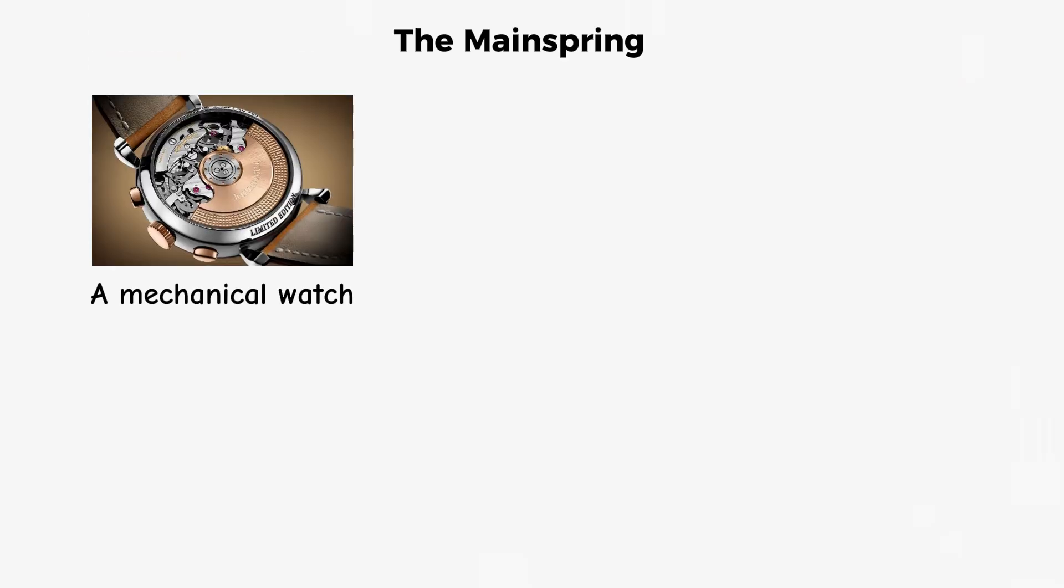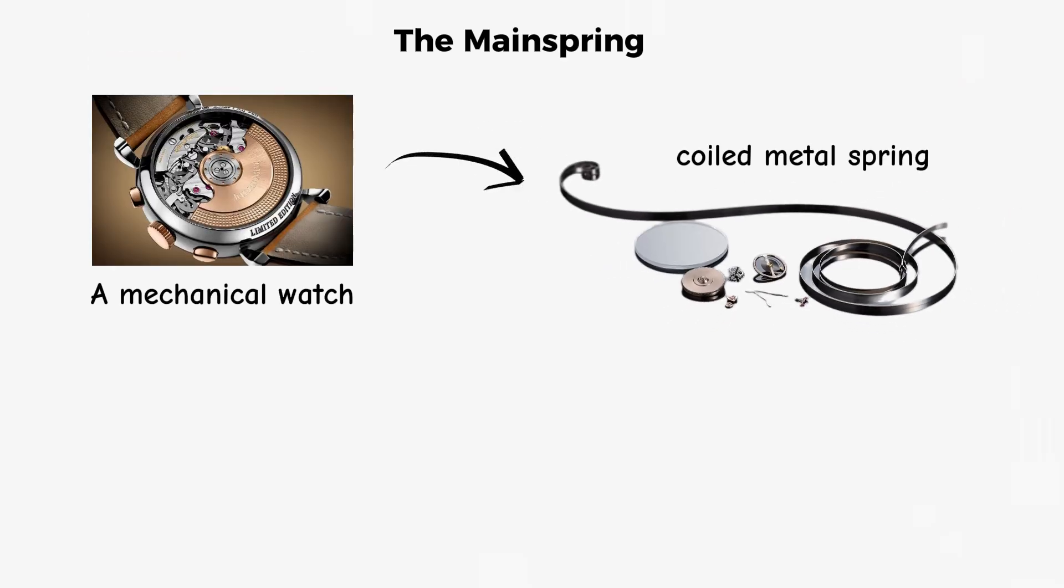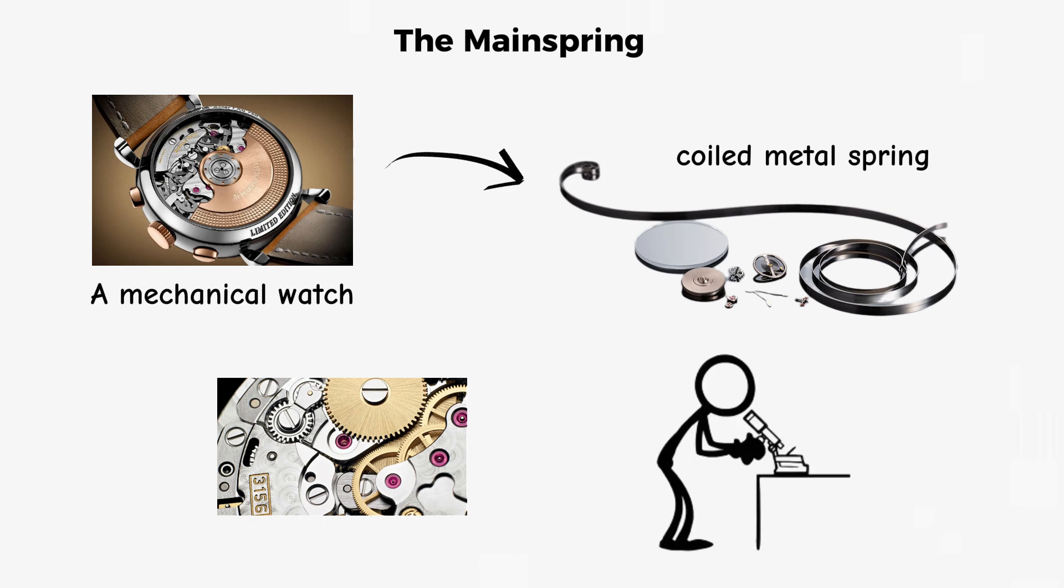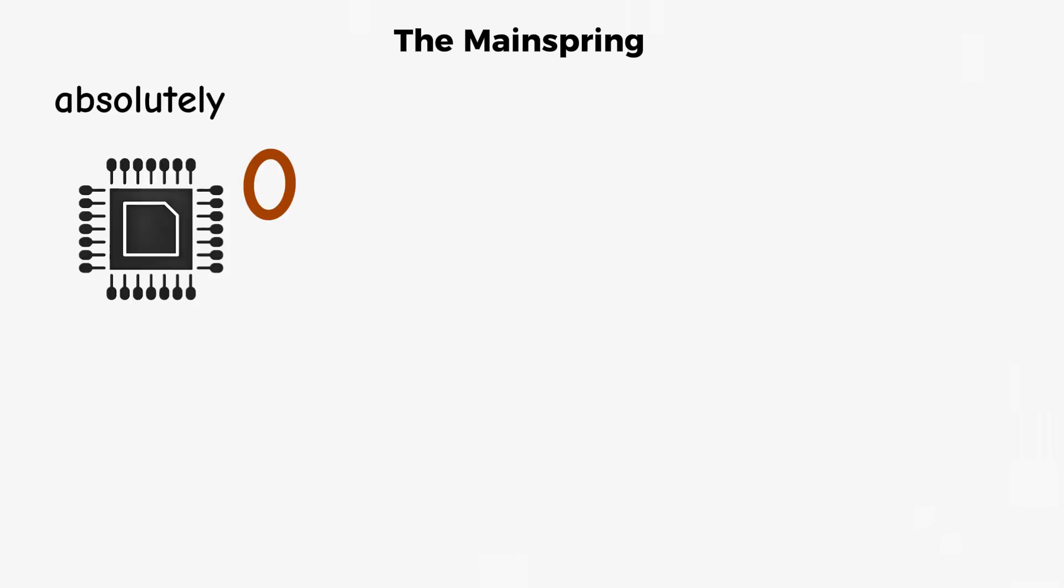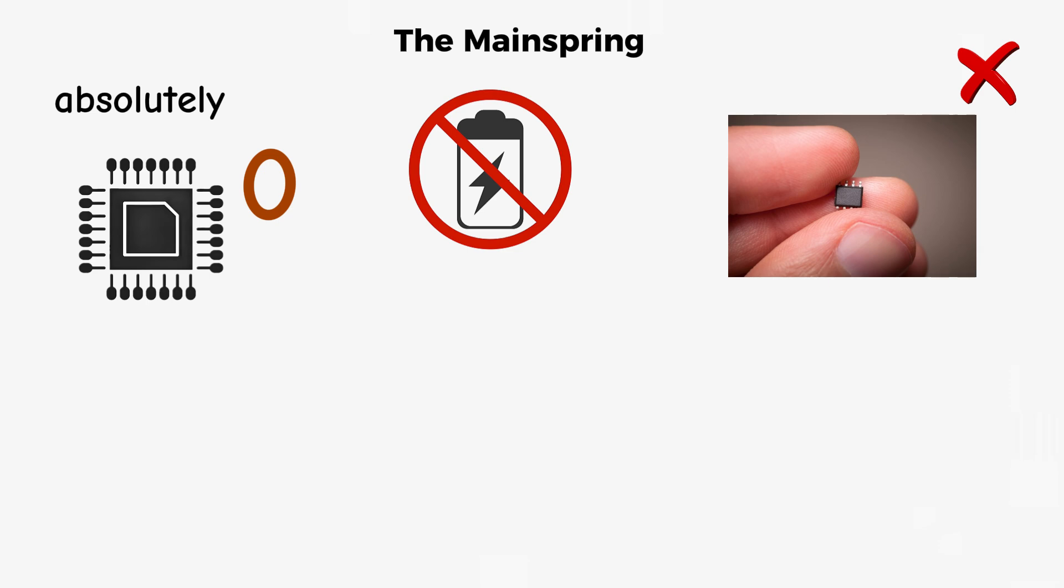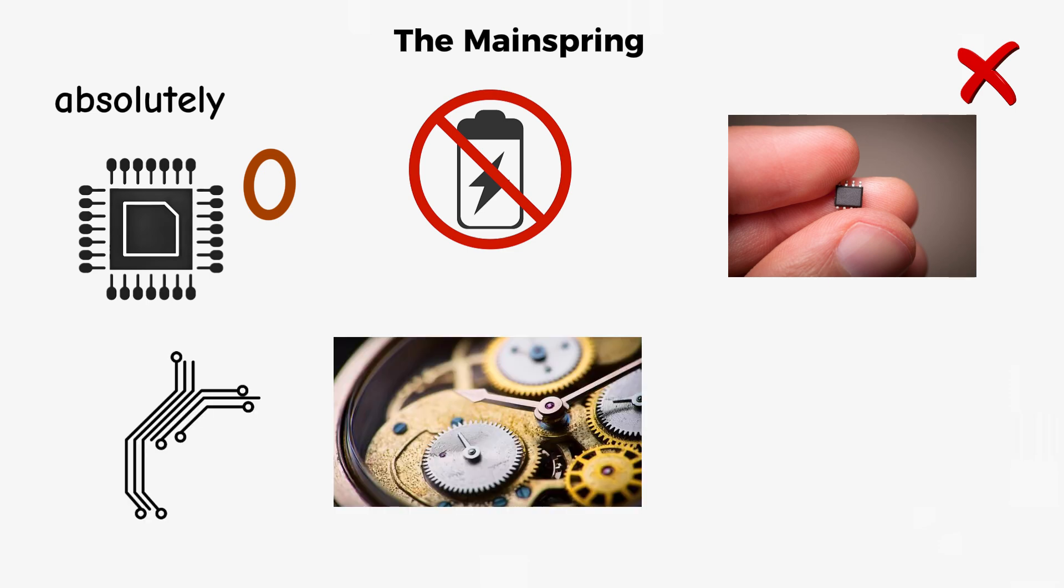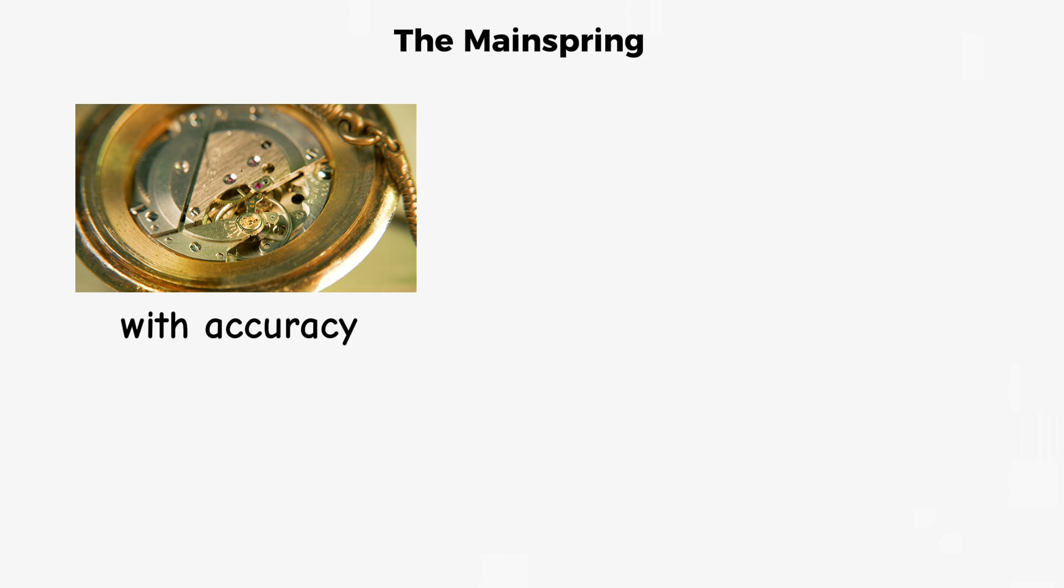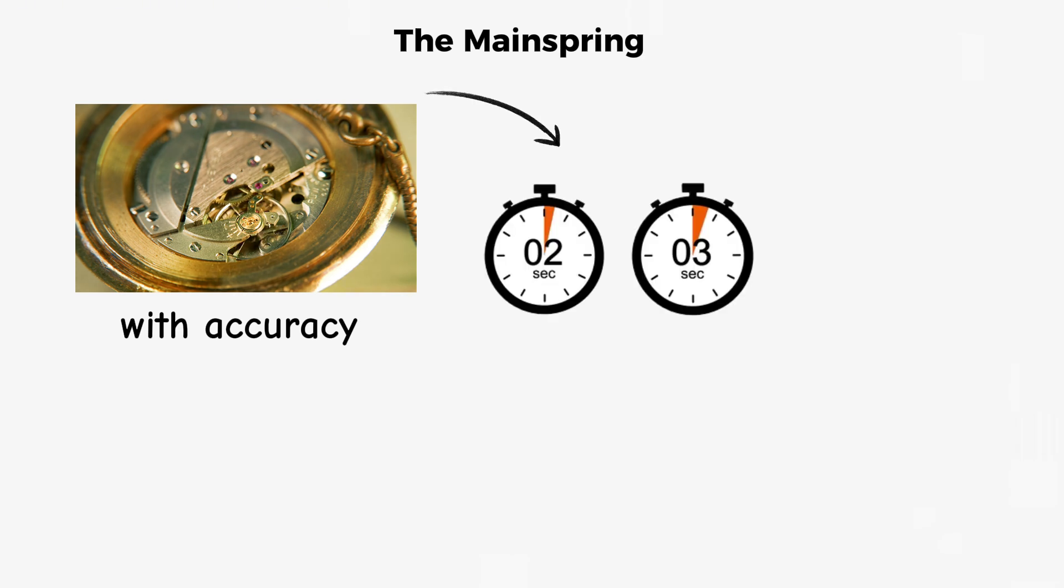The mainspring. A mechanical watch is powered by a coiled metal spring, gears machined to microscopic tolerances, and absolutely zero electronics. No battery, no microchip, no circuitry.